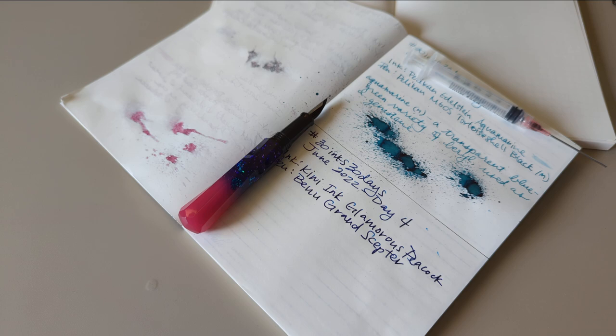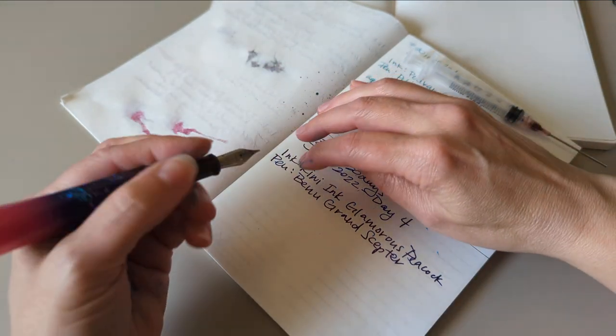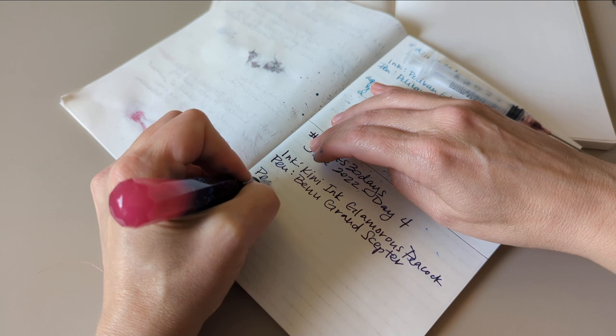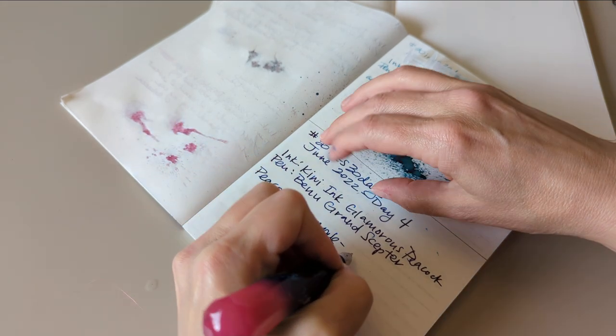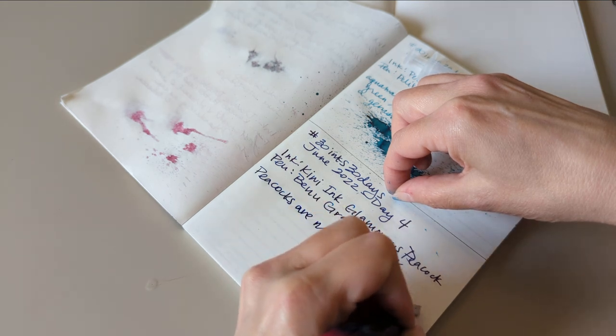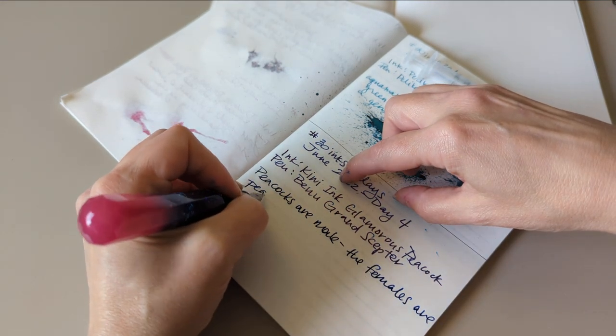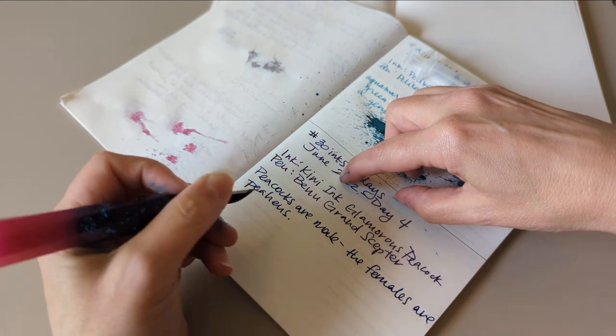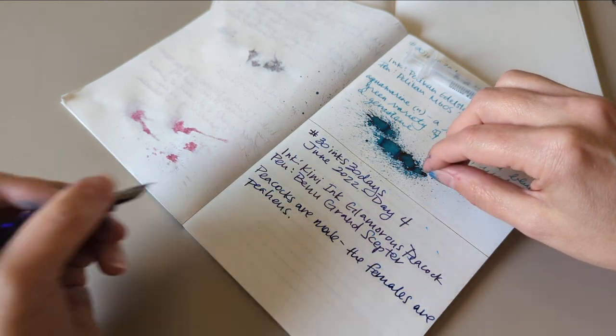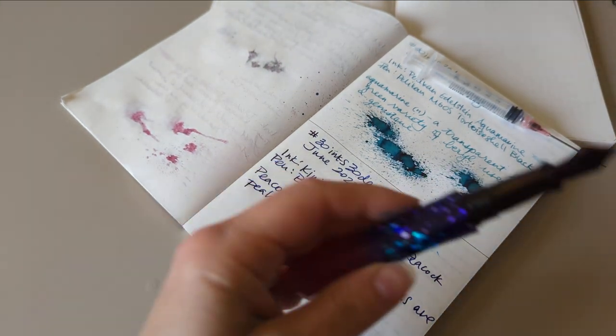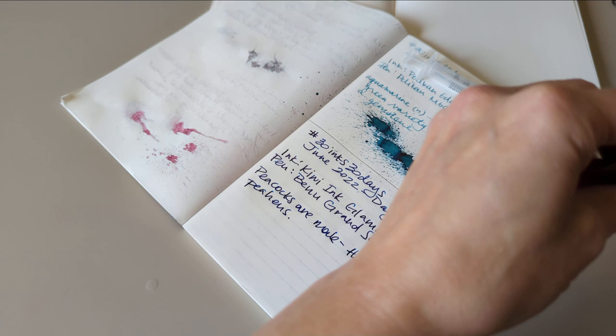Sorry, I came across a funny word because I'm a child. Yes, okay. So peacocks are male. The females are peahens. See, you like knowing that, right? You embiggened your brain.